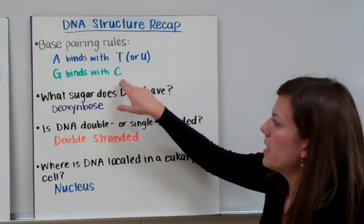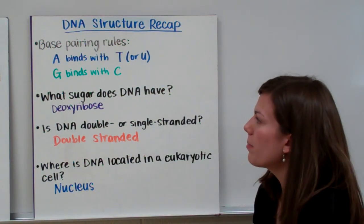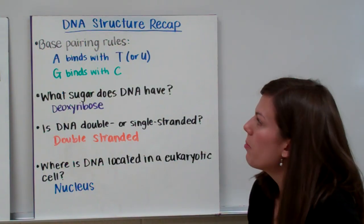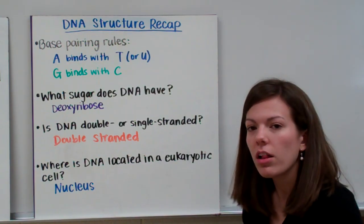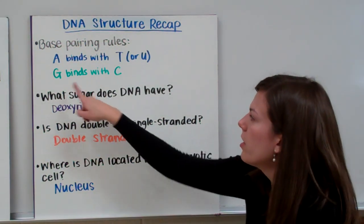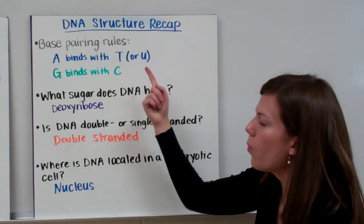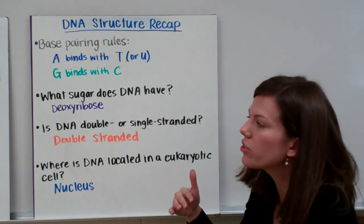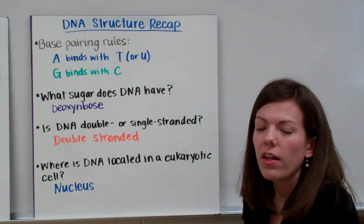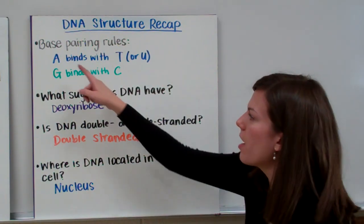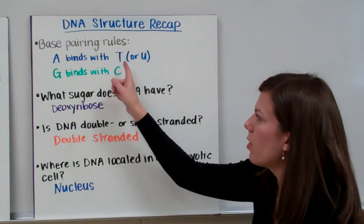G's bind with C. Now in our class we talk about an easy way to remember this. We have Guilford College in Greensboro. So Guilford and college, G binds with C, or C binds with G. It goes both directions. And then North Carolina A and T universities. So we have A binds with T, or T binds with A.